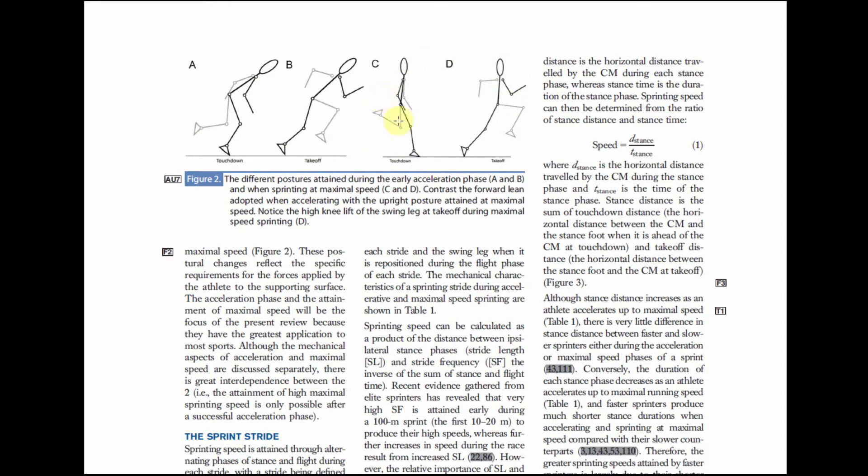When the athlete approaches their maximal speed, their posture shifts to a more upright posture. That is because the mechanical limitation to maximal sprinting speed appears to be the ability of the athlete to produce sufficient vertical force during those short stance phases.